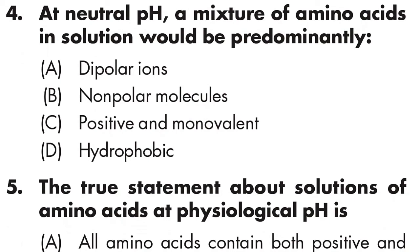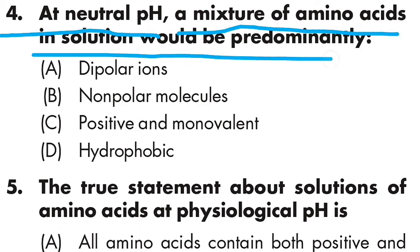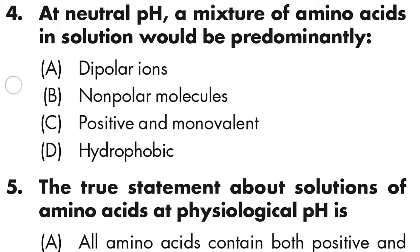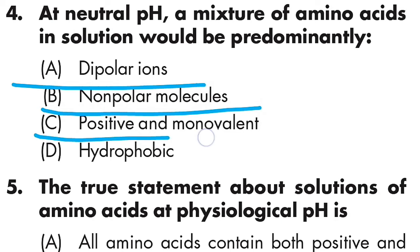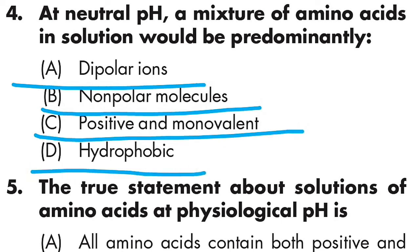Question number four: at neutral pH, a mixture of amino acids in solution would be predominantly what? Option A is dipolar ions, Option B is non-polar molecules, Option C is positively charged monovalent substances, Option D is hydrophobic. The correct answer is Option A: dipolar ions.